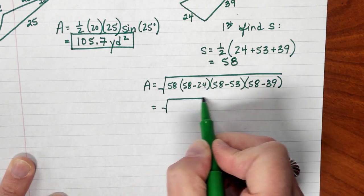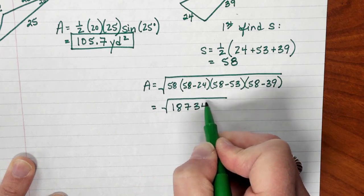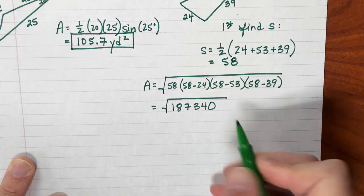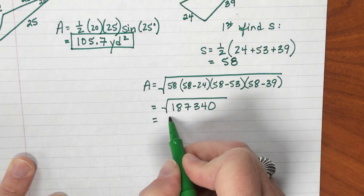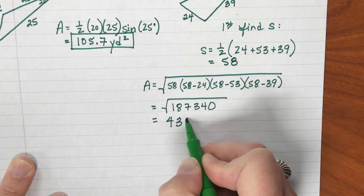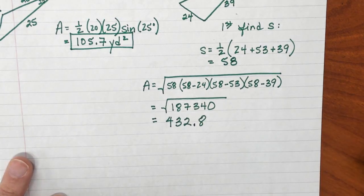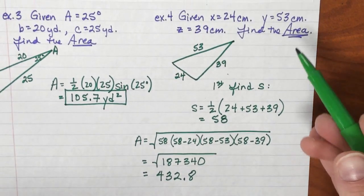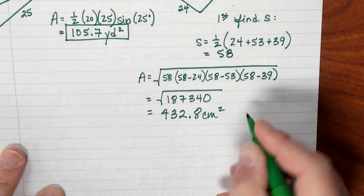Multiply all that out. You get the square root of 187,340. And don't forget to take the square root. That's where some people make their final mistake. They forget to do that final square root. That equals 432.8. Not done. No naked numbers. What do I have? I have centimeters. This is area, so it's going to be centimeters squared.